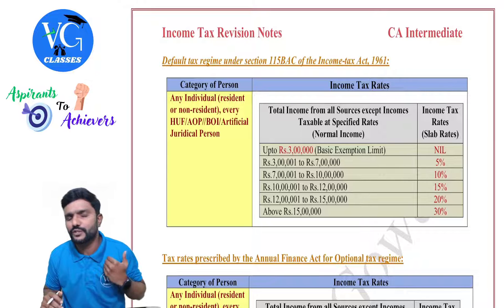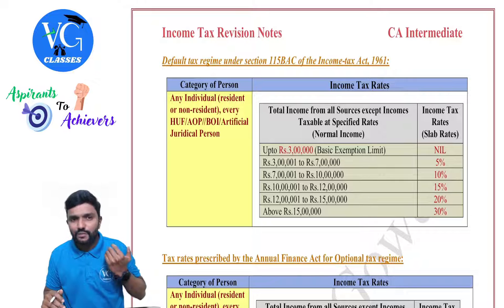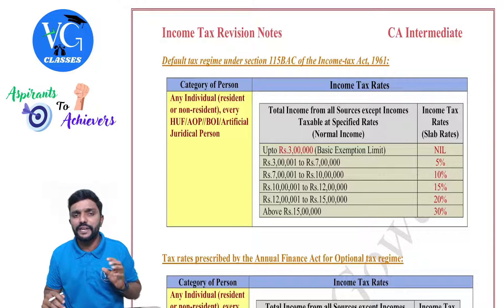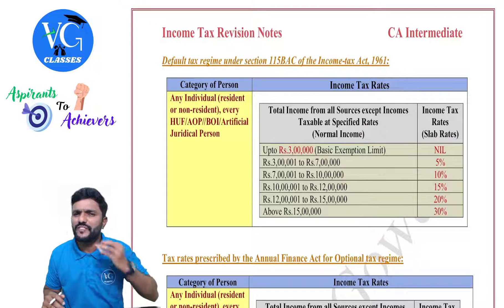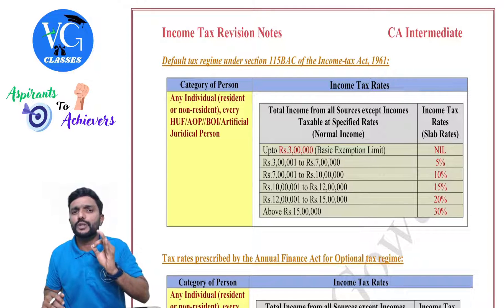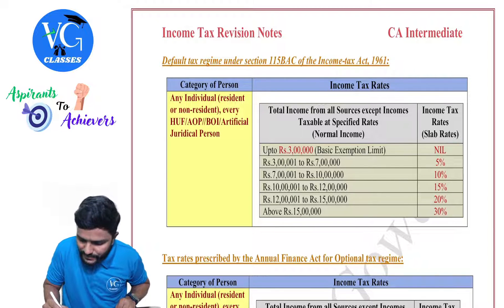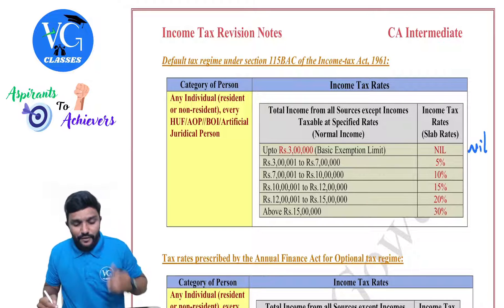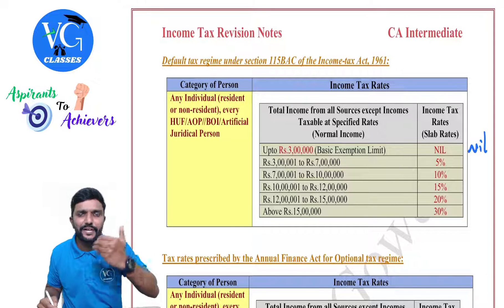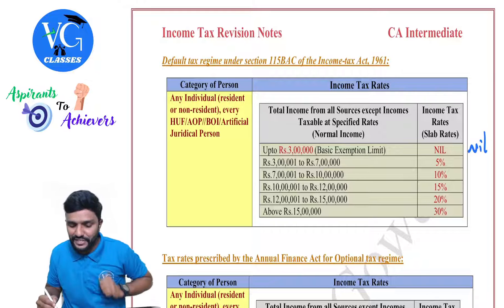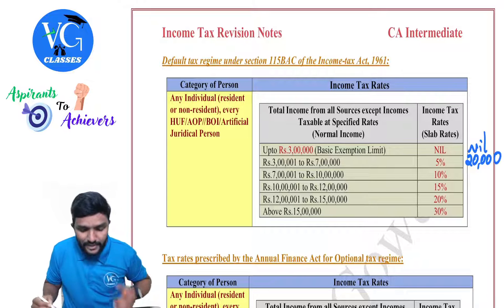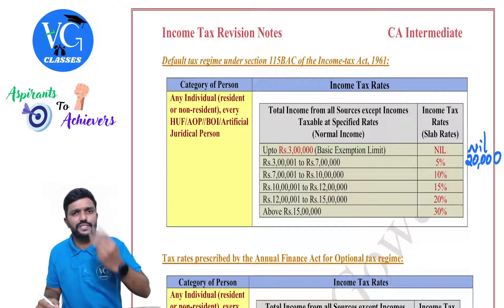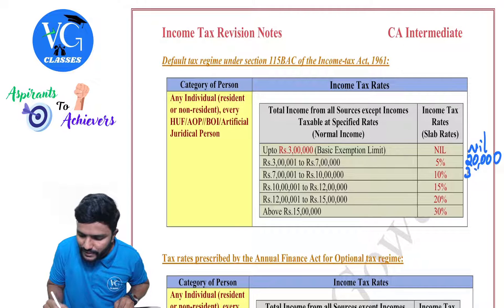That is the main reason why I am covering this. Now I will take an example and quickly explain it. Assuming the individual who is following the default tax regime has a total income of 20 lakh, which includes completely normal income — how do we calculate the tax? Up to 3 lakh, it is nil. From 3 lakh to 7 lakh, the difference is 4 lakh at 5%, which comes to 20,000. Then from 7 lakh to 10 lakh, the difference is 3 lakh at 10%, which comes to 30,000.